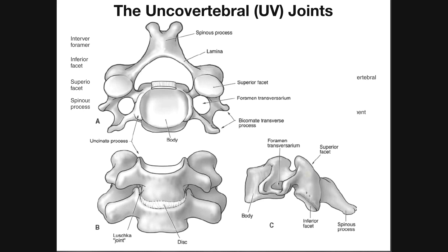Here are some pictures of actual cervical vertebrae viewed from a superior angle. This is the vertebral body, and on top of this we would see the intervertebral discs. Importantly, flanking the body laterally on either side, we have elevated regions called the uncinate processes.